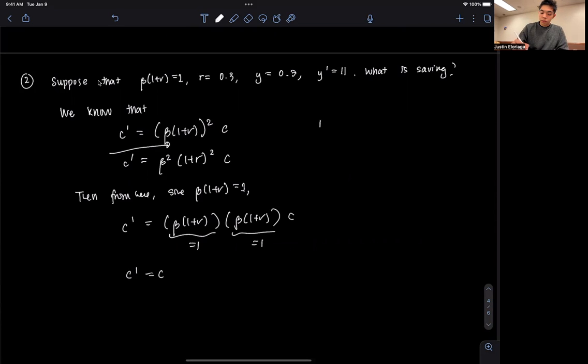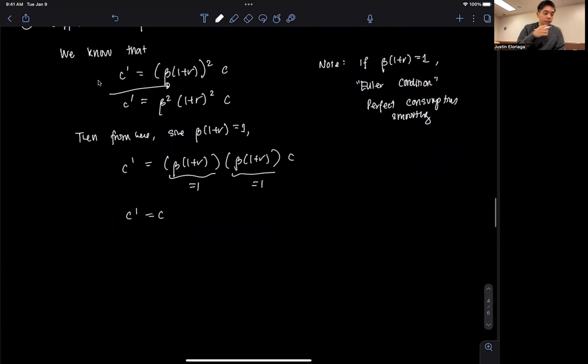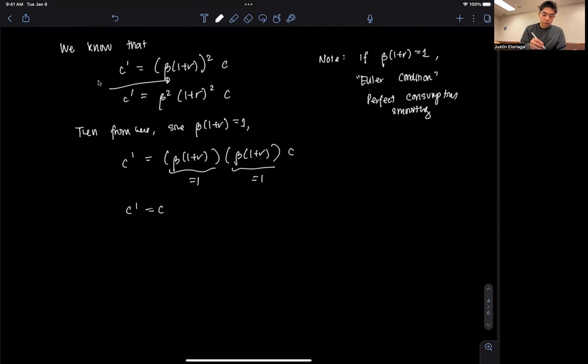So just to note, if beta times 1 plus r is equal to 1, we sometimes refer to this as the Euler condition, and this is the case of perfect consumption smoothing. That is consumption doesn't change, it's the same throughout time, at least in these two periods. So because of this, we know that C prime is equal to C.